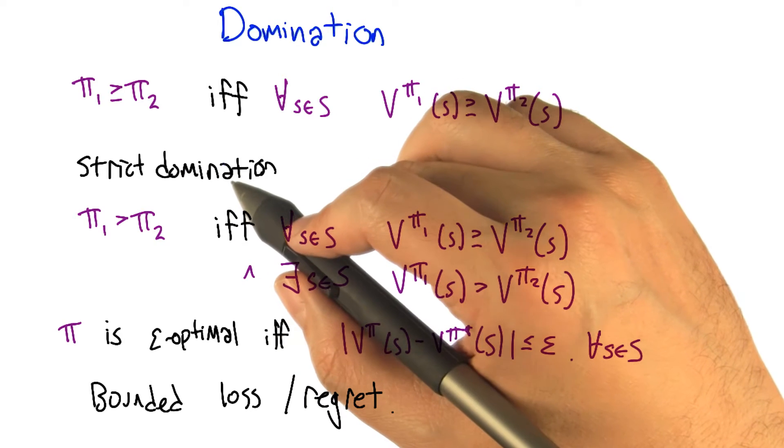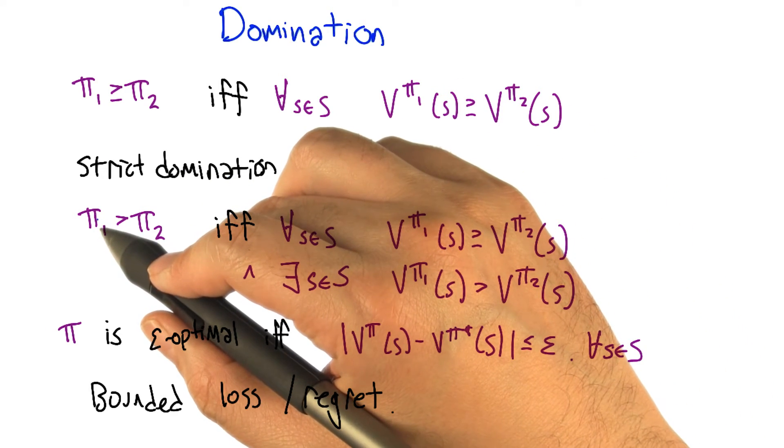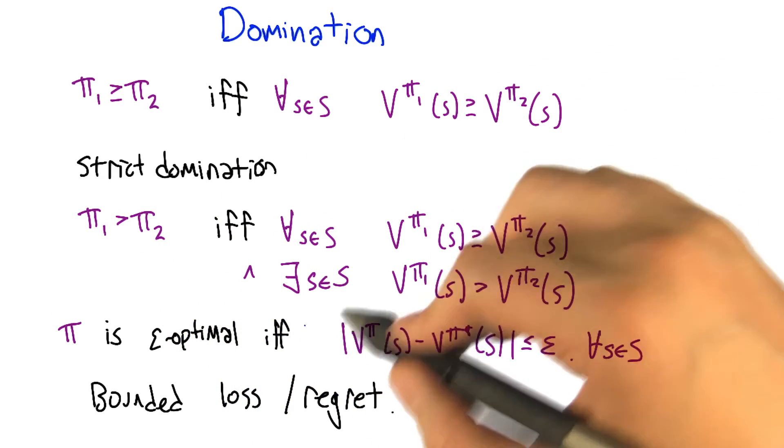And in fact, we're going to say we have strict domination if it's the case that policy one dominates policy two and there's some state for which it's actually strictly better. It's not equality.